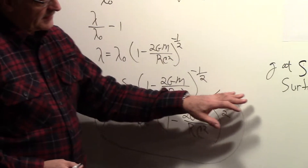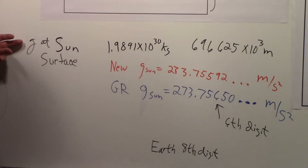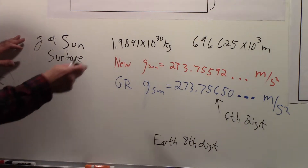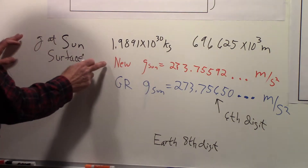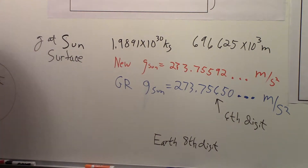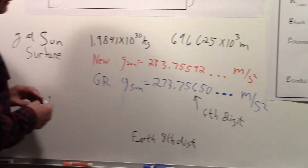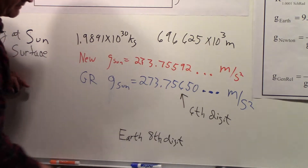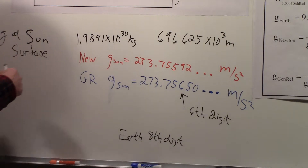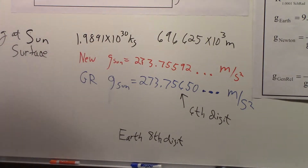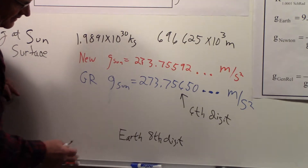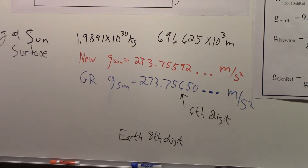Looking at the Sun's surface: we have the Sun's mass and the Sun's diameter, and we can calculate the Newtonian result to get a specific number. Using the general relativity expression, we get a slightly different number — the change shows up at the sixth significant digit. I'm carrying many digits, just substituting in the numbers. If you treat them as exact, you see the difference occurring at the sixth digit out. For the Earth, the difference would occur at the eighth digit out.